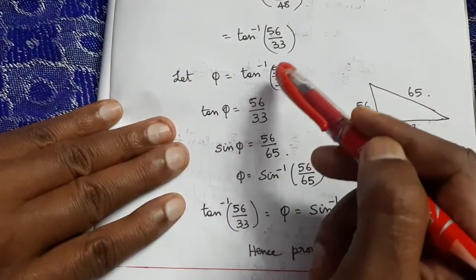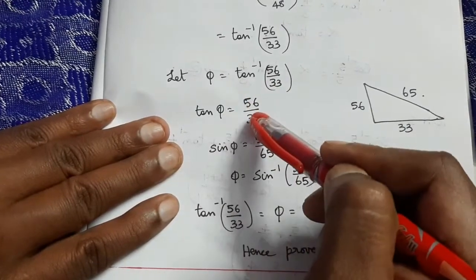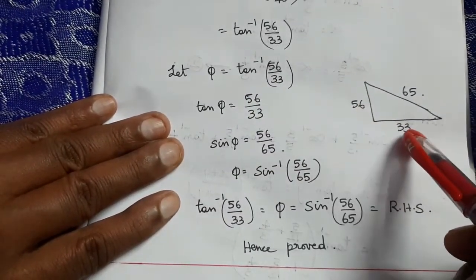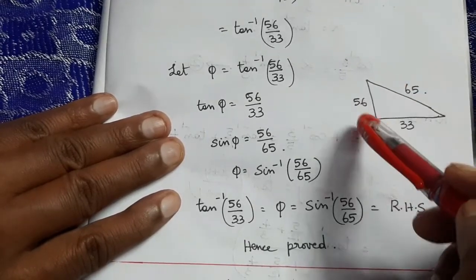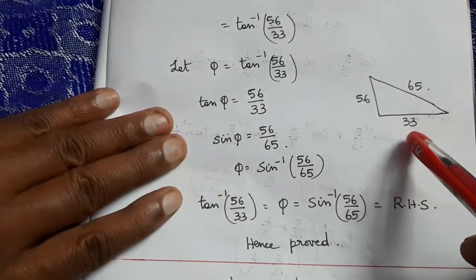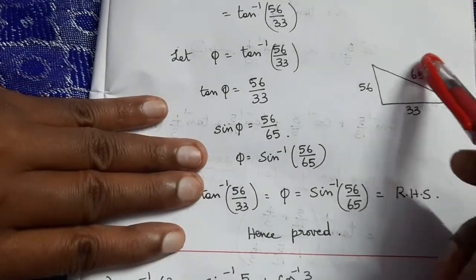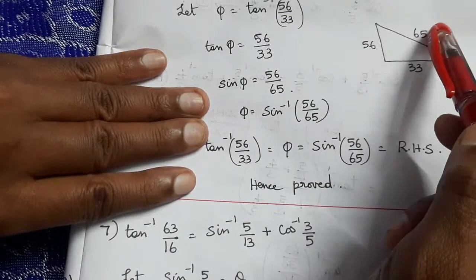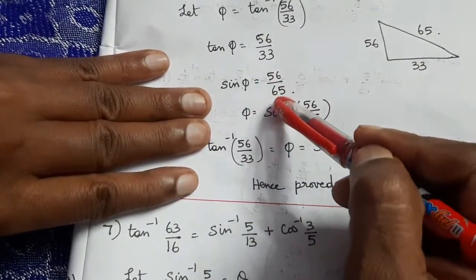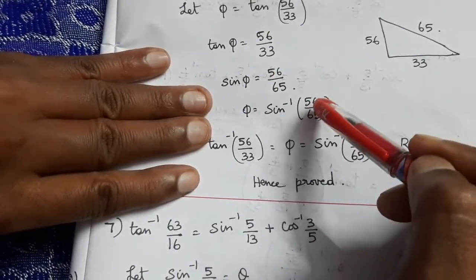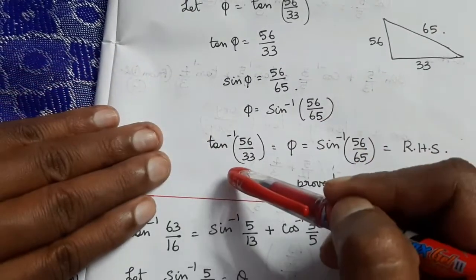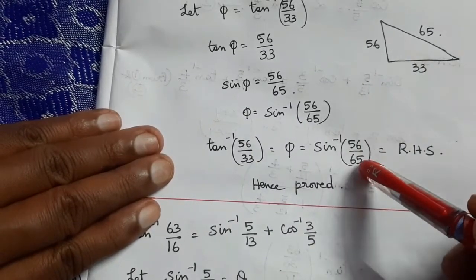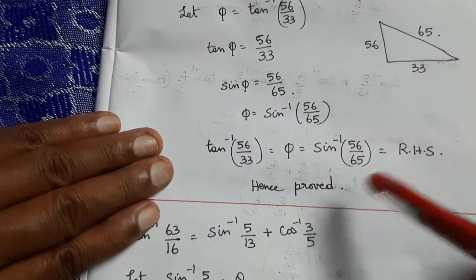Let φ = tan⁻¹(56/33), so tan φ = 56/33. Right-hand triangle: opposite = 56, adjacent = 33, hypotenuse = √(56² + 33²) = 65. So sin φ = 56/65, giving φ = sin⁻¹(56/65) = RHS. Hence proved.